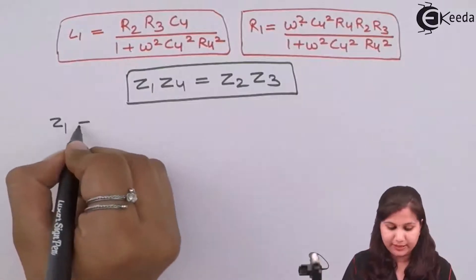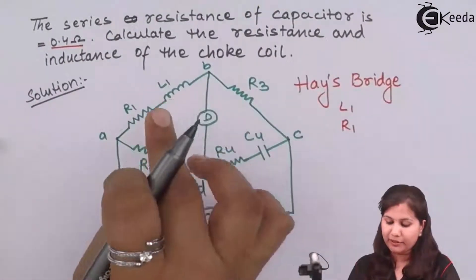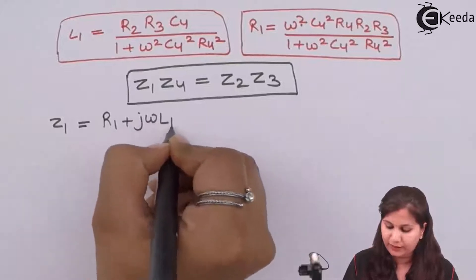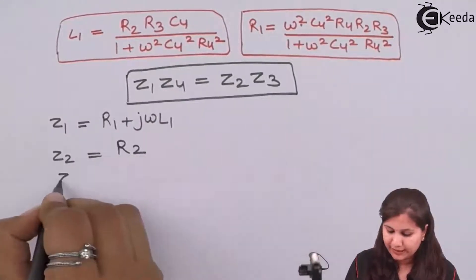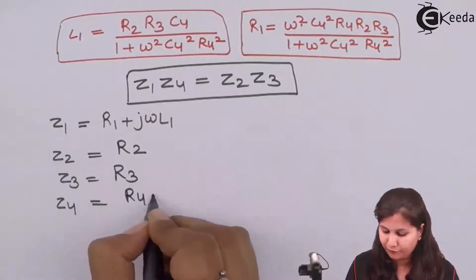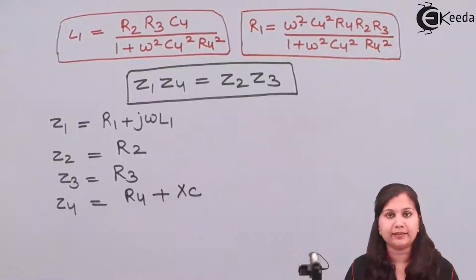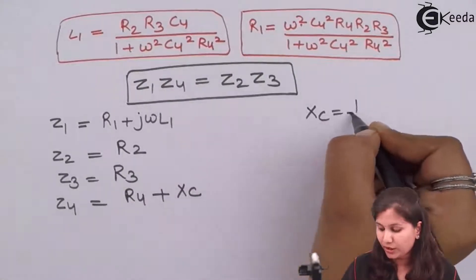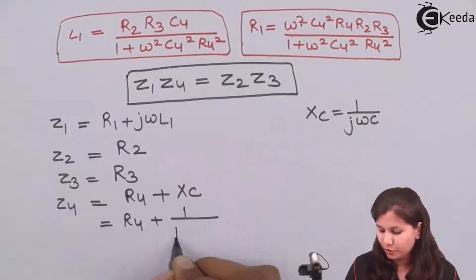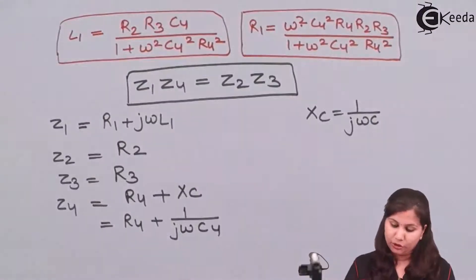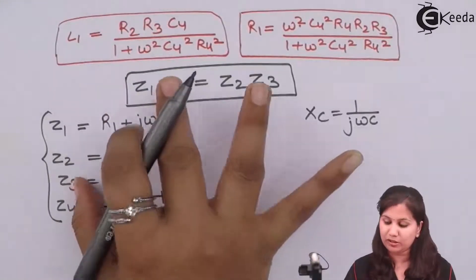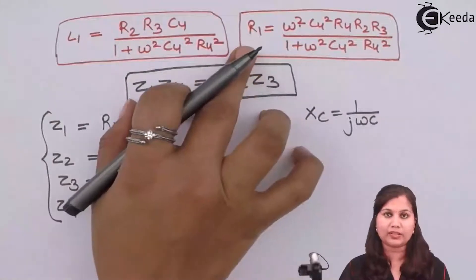Z1 is the series combination of R1 and L1, so it will be R1 + jωL1. Z2 is the resistance R2, Z3 is the resistance R3, and Z4 is the series combination of R4 and the capacitor, where Xc equals 1/(jωC). So Z4 = R4 + 1/(jωC4). These are the four impedances we will put into the balance equation to derive L1 and R1.